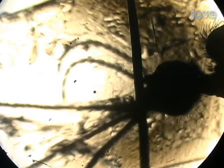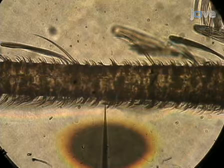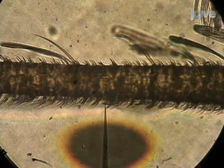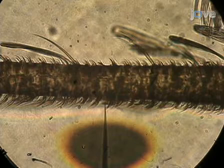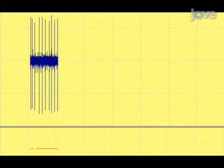Insert the reference electrode into the eye. Switch to the 100x objective and insert the recording electrode into the peg sensillum on the palp. Once the electrode is in the sensillum, the spontaneous activity of the cells can be detected.